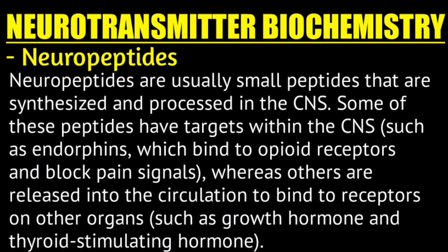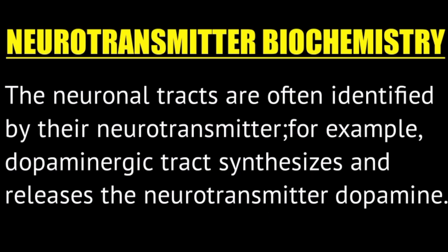Neuropeptides are mostly found in the CNS and are synthesized there. They include hormones of the pituitary gland such as growth hormone and thyroid stimulating hormone, as well as endorphins. Neural tracts are a collection of nerve axons.